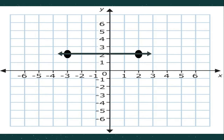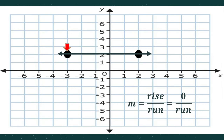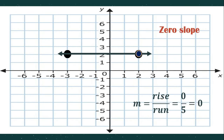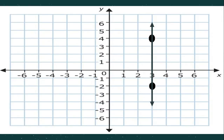Next we have a horizontal line. Starting from this point, does the graph rise? No, it does not — so our rise is zero. Counting the run going to the right: one, two, three, four, five — our run is five. Zero over five equals zero, so this graph has zero slope.